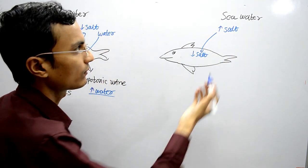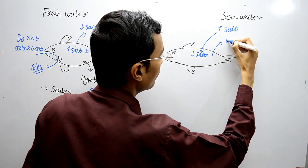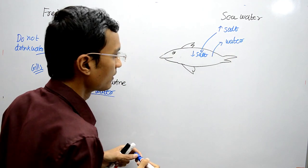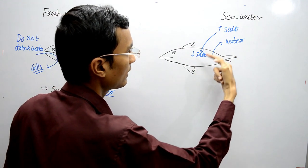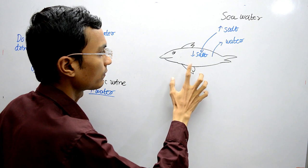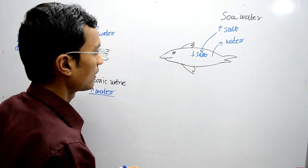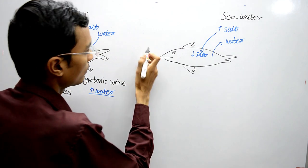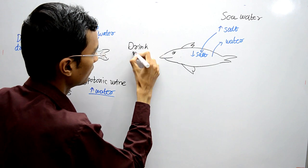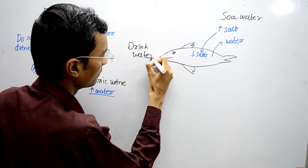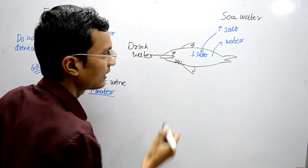So salt is continuously moving inside the body and water is moving outside the body — the fish is continuously losing water. To prevent this, saltwater fishes drink water, so water is going inside the alimentary canal.